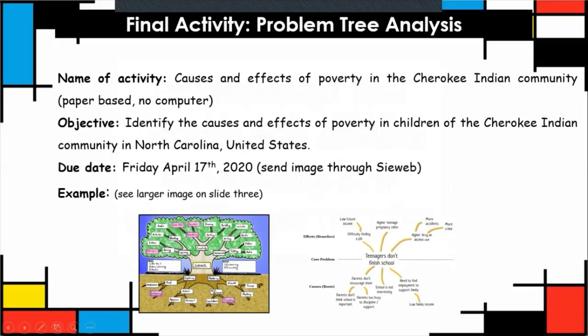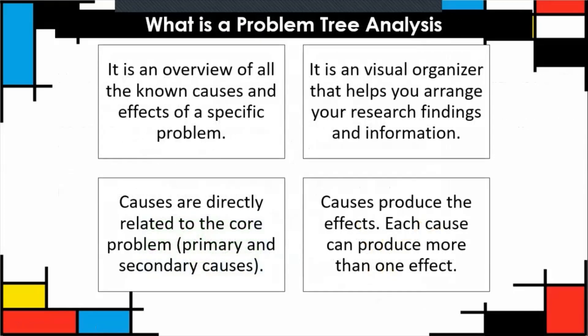What is a problem tree analysis? It's an overview of all the known causes and effects of a specific problem. It is also a visual organizer that helps you arrange your research findings and information. Remember, causes are directly related to the core problem. They could be primary and secondary causes, which we're going to see some examples of. Causes produce the effects, and each cause can produce more than one effect.